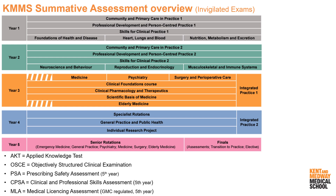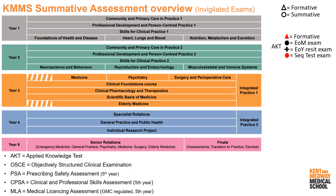There are some acronyms you'll hear, as discussed in the previous presentation. The black triangle indicates formative elements or assessments, and the black circle indicates summative assessments. There are particular indicators for the AKTs as well as for the OSCE.